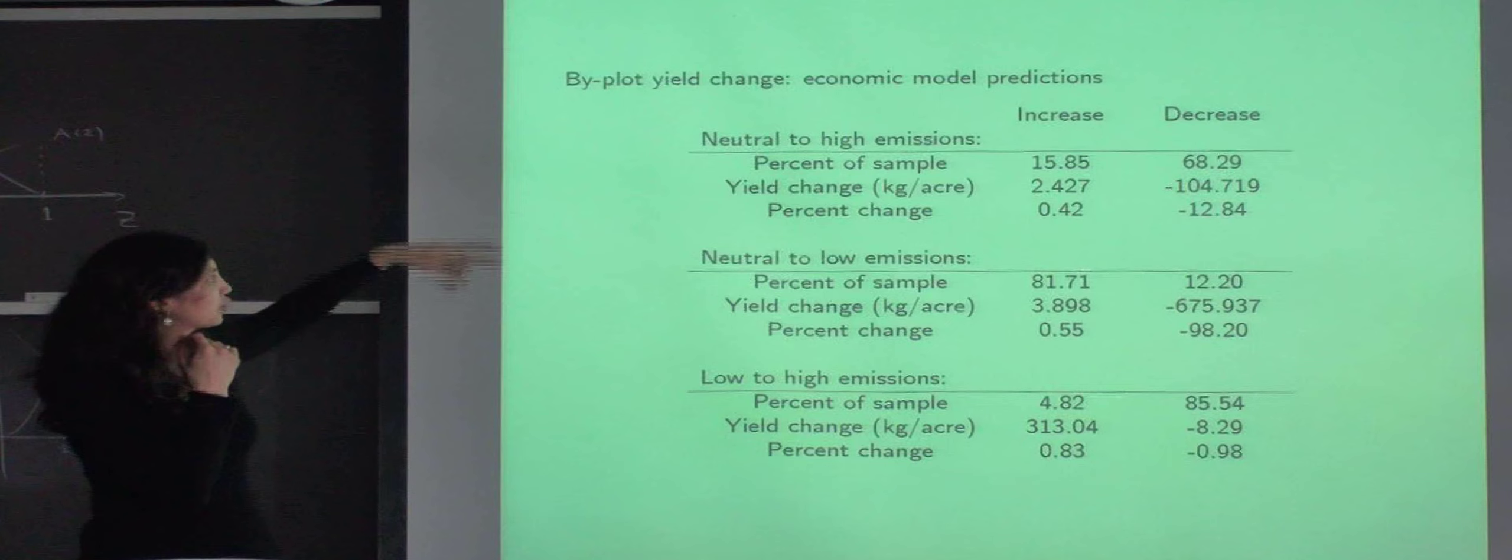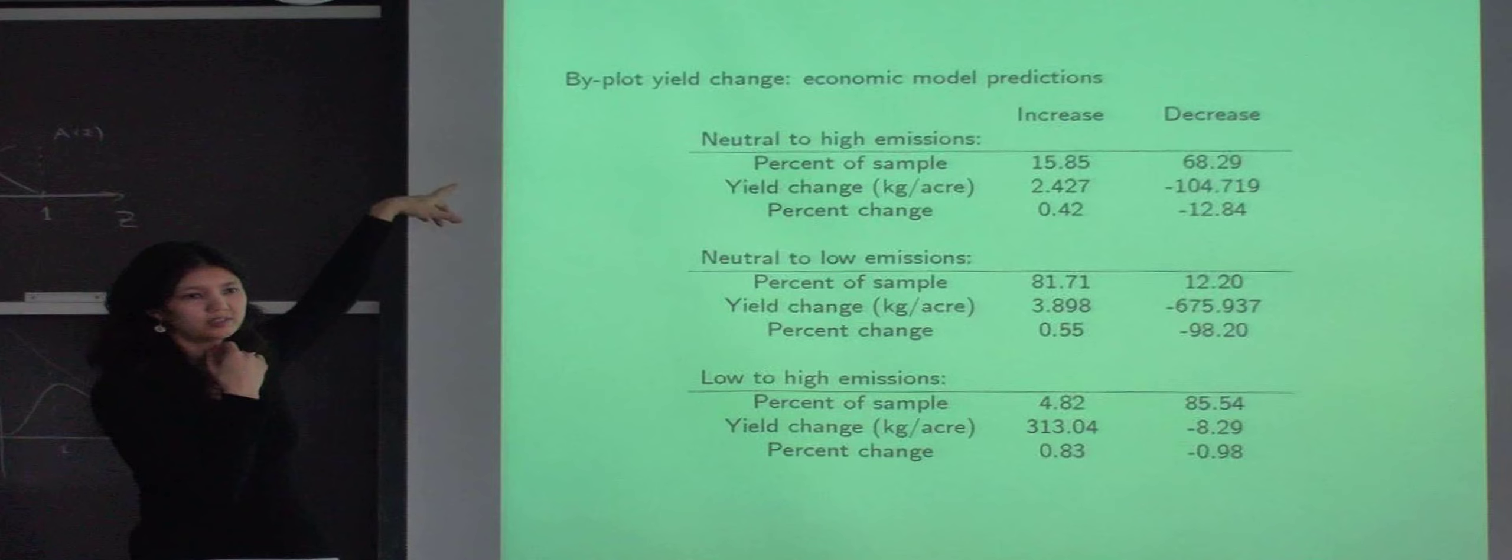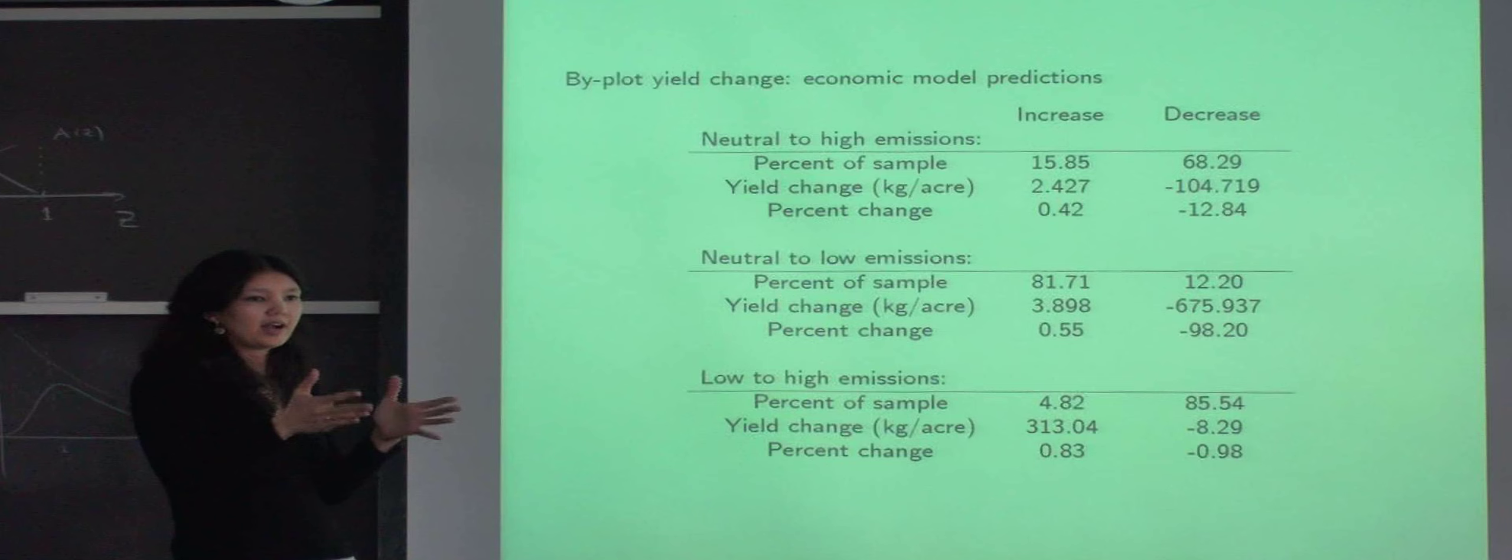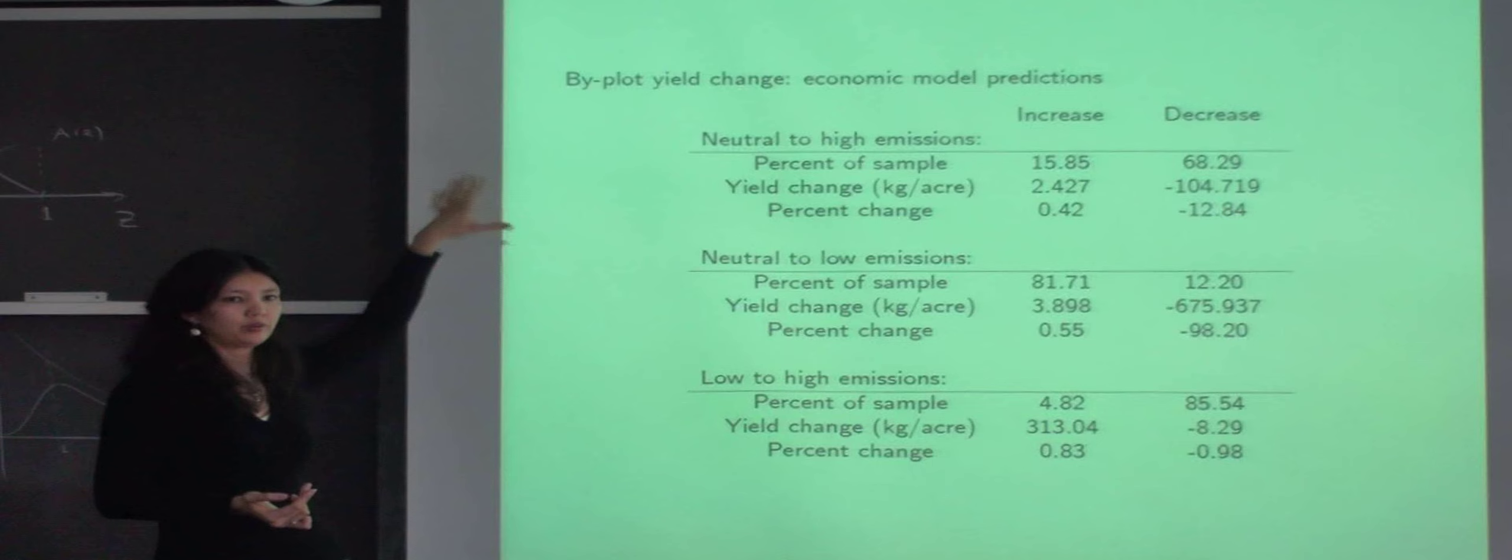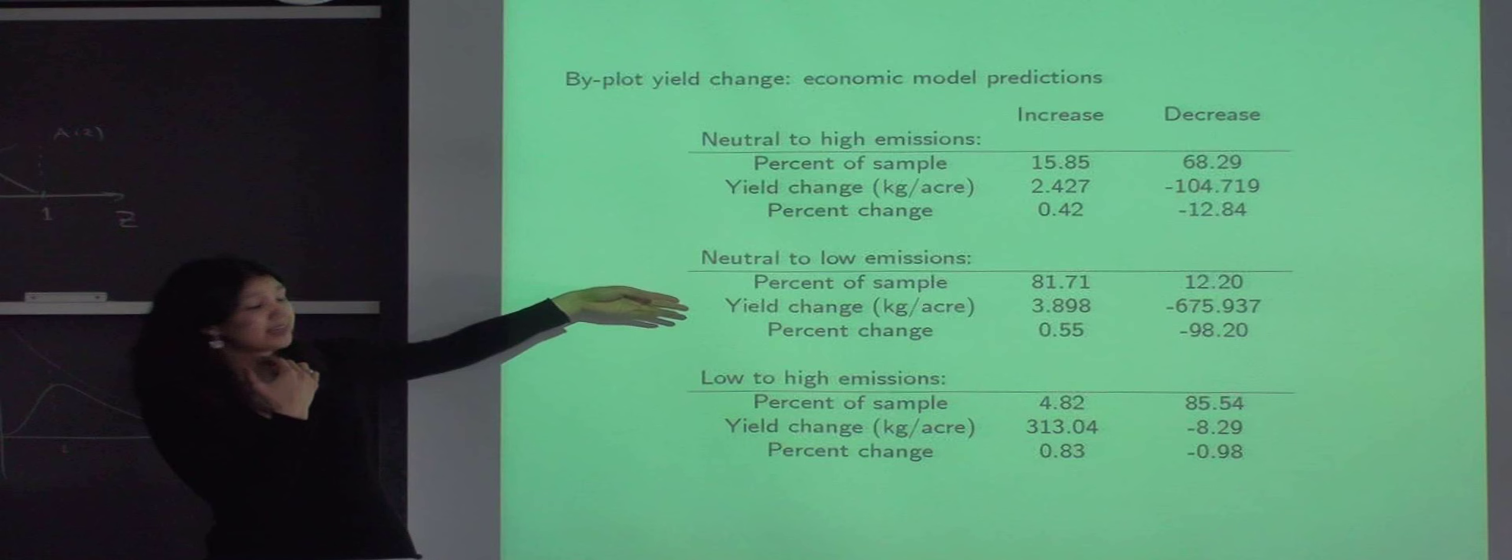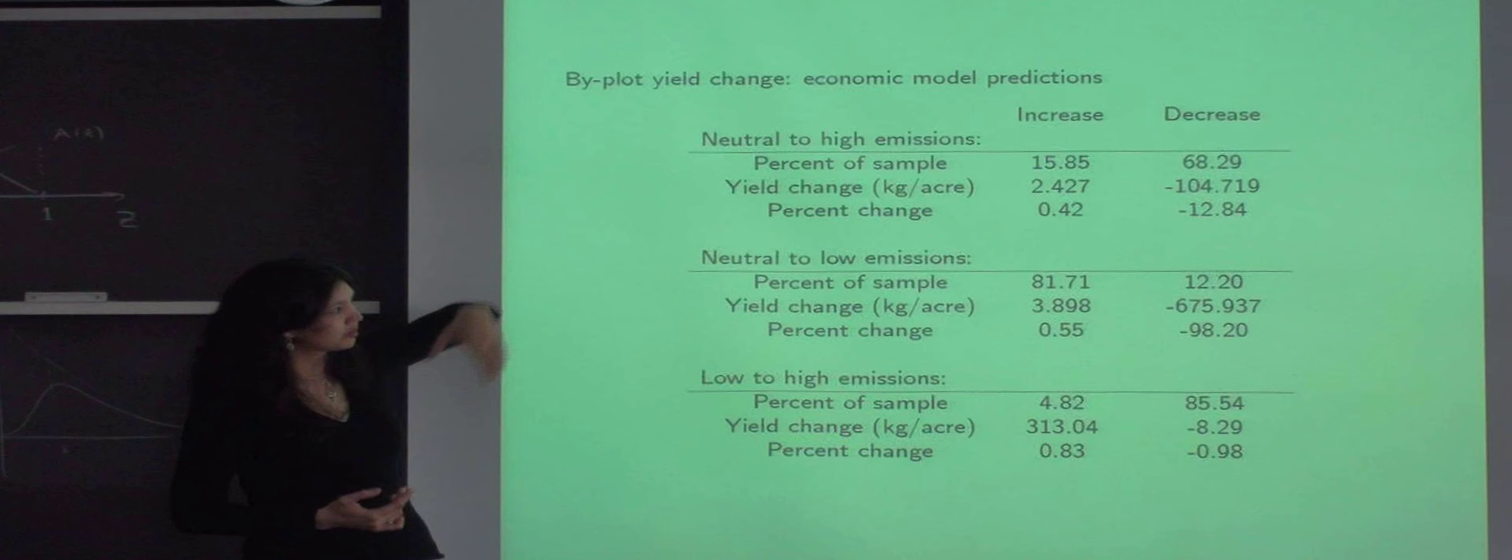But just comparing our model predictions to DSSAT, we see that even taking just one way farmers can adjust, changes in input levels, makes a big effect on rice yields. And we can also see that farmers are able to actually benefit from a milder climate change and to some extent neutralize the adverse effect of the more extreme climate change.